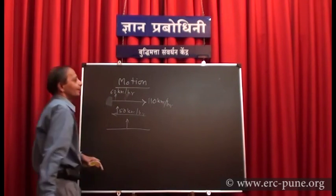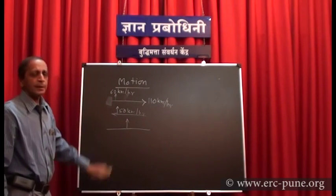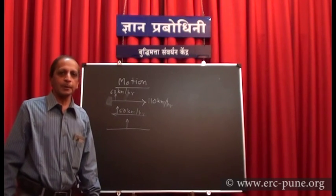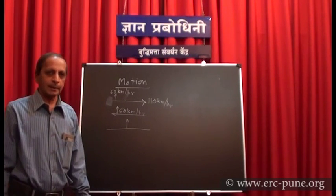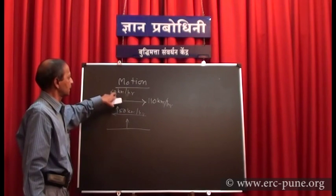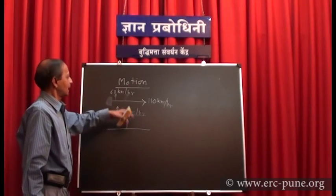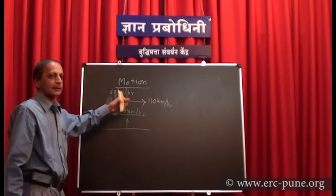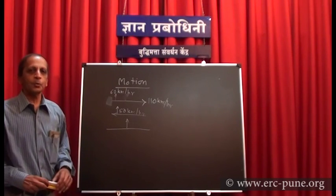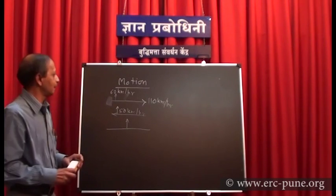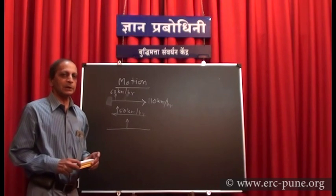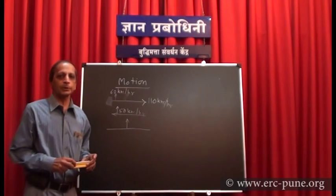So the description of the motion will change from person to person. For me, this is 50 and this is 60, but for this person the description of motion is totally different. So motion is basically a relative term — it will change from person to person.